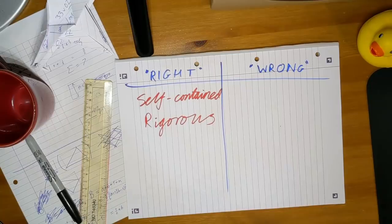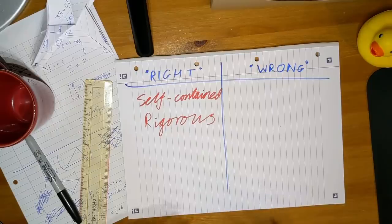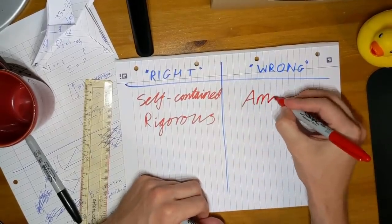But there's a different proof of Pick's theorem, the wrong way, which is just amazing, and I want to share it with you.